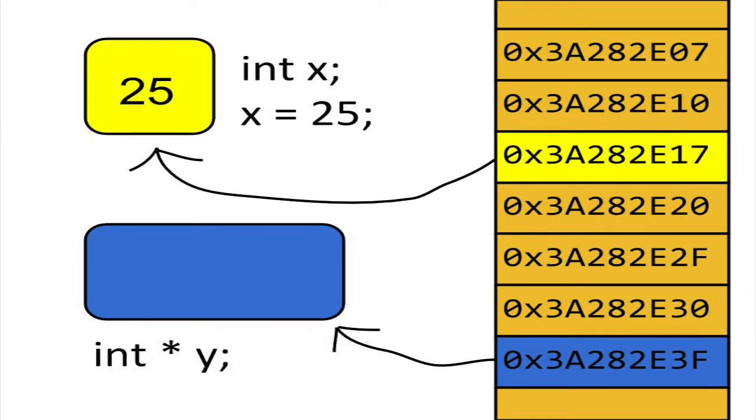Since a pointer is a variable, it's also a named location in memory. Suppose we declare a pointer to an integer. We will give the pointer the identifier y.